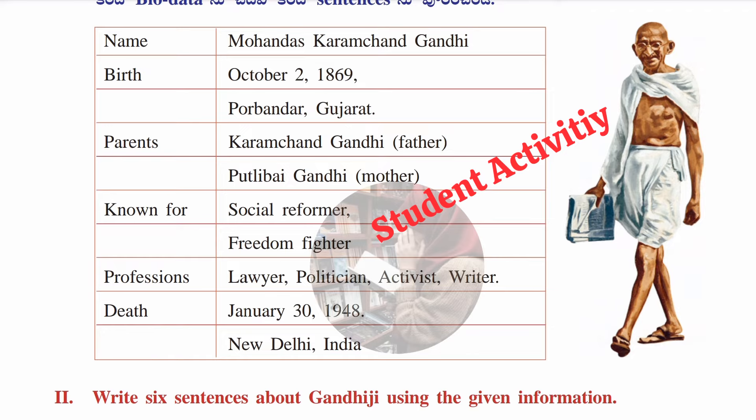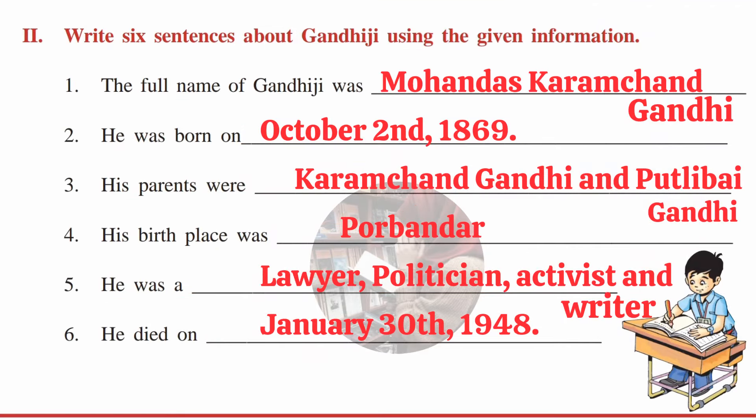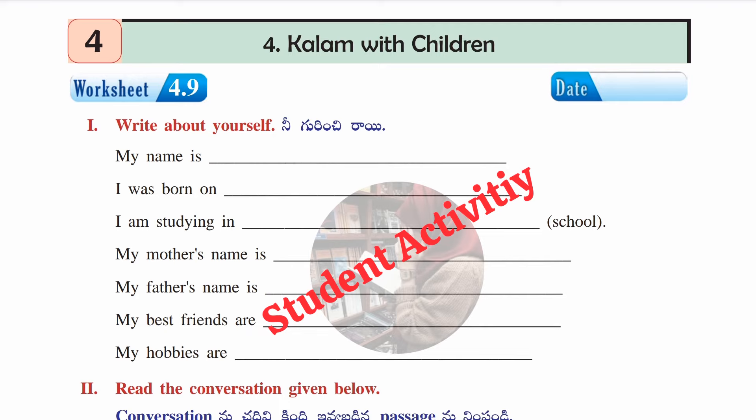The second section: write six sentences about Gandhi Ji using the information given. Sample sentences: his full name was Mohandas Karamchand Gandhi; he was born on October 2nd, 1869; his parents were Karamchand Gandhi (father) and Putlibai Gandhi (mother); his birthplace was Porbandar in Gujarat; he was a lawyer, politician, activist, and writer; he died on January 30, 1948.